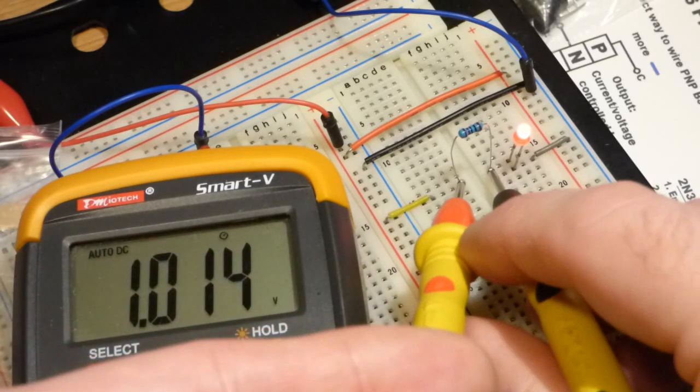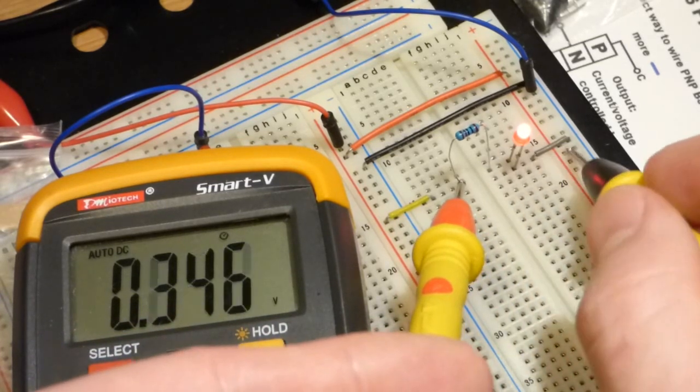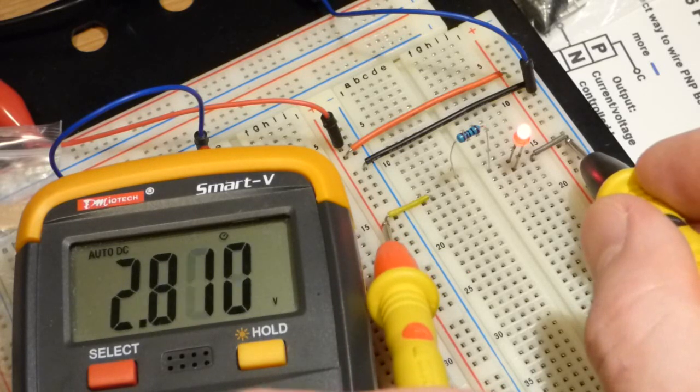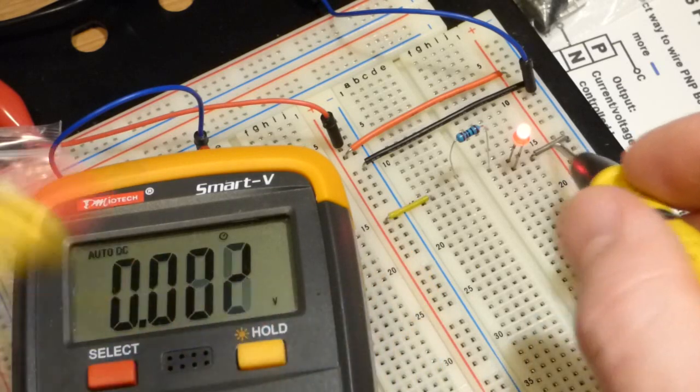Now we know that we have about 1 milliamp of current through the LED because it's a 1000 ohm resistor. Of course that's not the power source voltage; we can either measure it here or directly across the components.